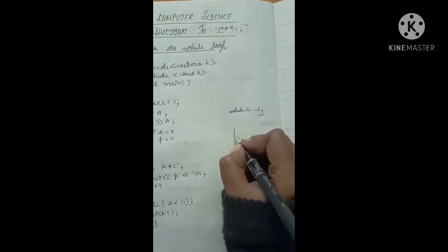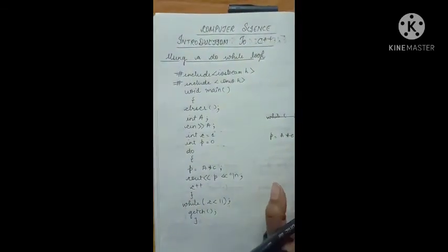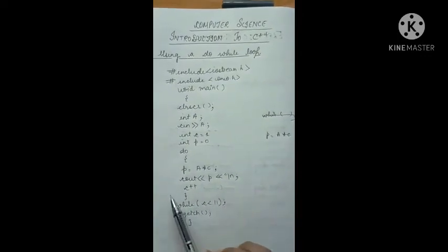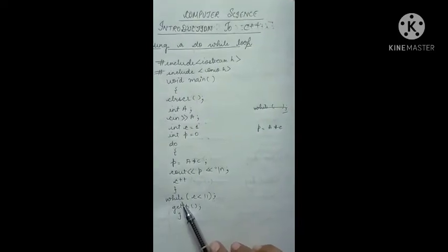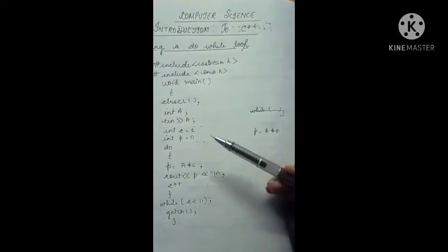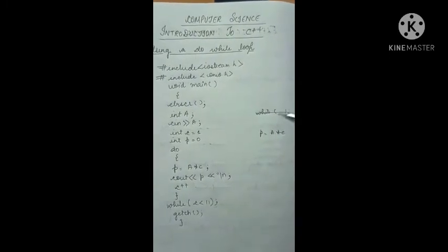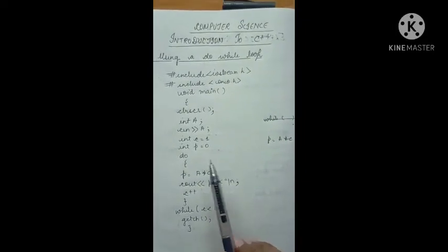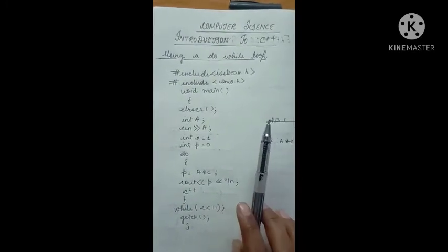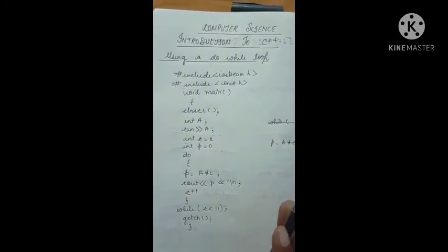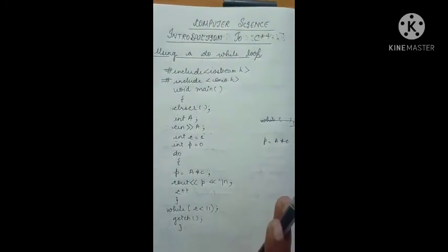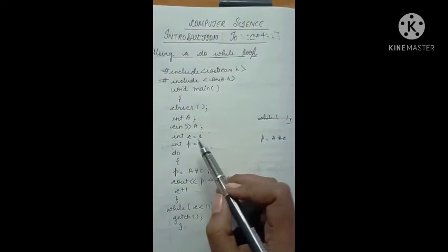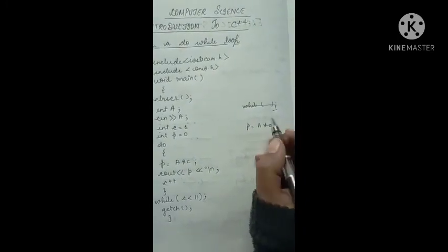The equation is p equals a multiplied by c. It works similarly to a while loop, but the one difference is that in a do-while loop, it first executes the block of code and then checks the condition. In a while loop, the computer checks the condition first and then executes the block. While loop executes only when the condition is true; do-while executes irrespective of the condition — after execution, the condition is checked.